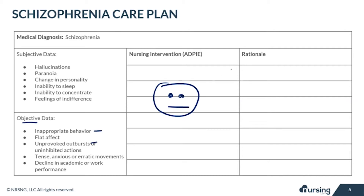Objective data you might notice in a patient with schizophrenia includes inappropriate behavior, a flat affect, and unprovoked outbursts — all due to the disruptive brain chemicals. You may also notice tense, anxious, or erratic movements due to paranoia and hallucinations, as well as a decline in academic or work performance, especially during schizophrenic episodes.